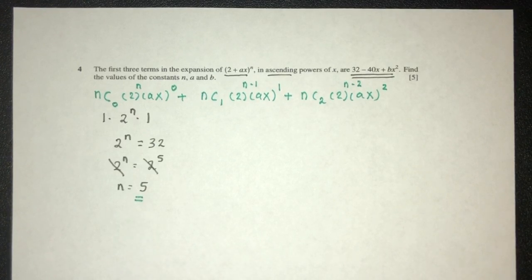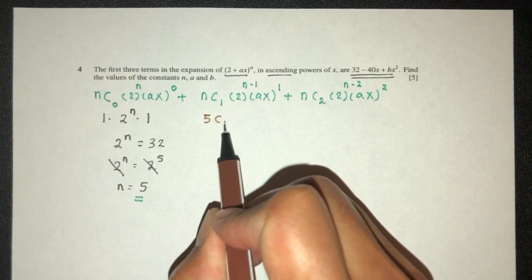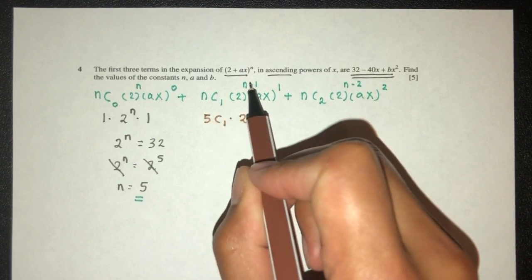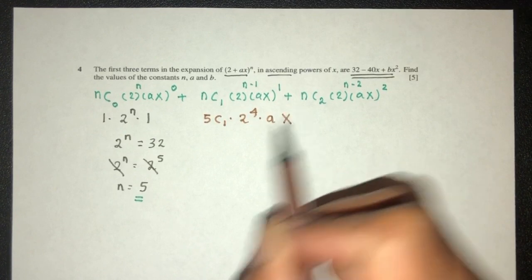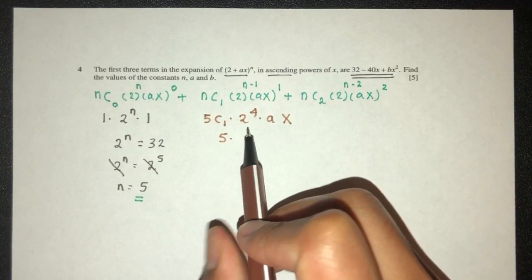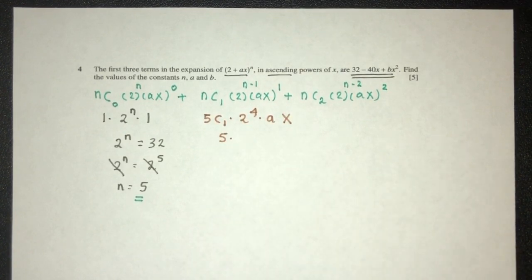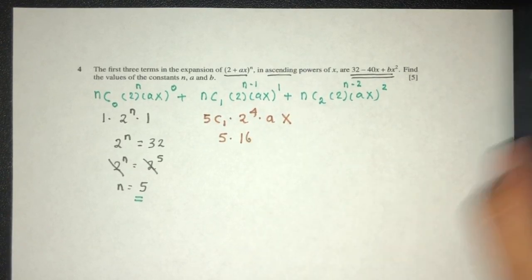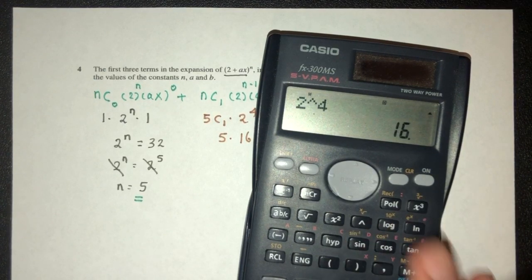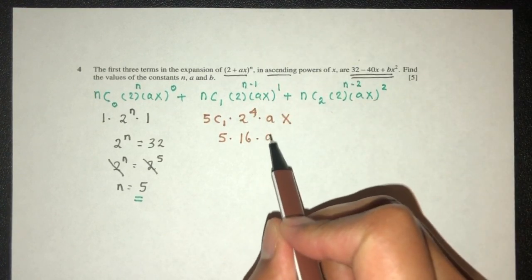We can use that to find the following values. Now, we know n is 5, 5 choose 1 times 2, here we have 5 minus 1 is 4, then that will be ax. That will be 5 times 32. Now, 2 power 4 is actually 16, we can always double check that, 2 power 4 is 16, exactly.